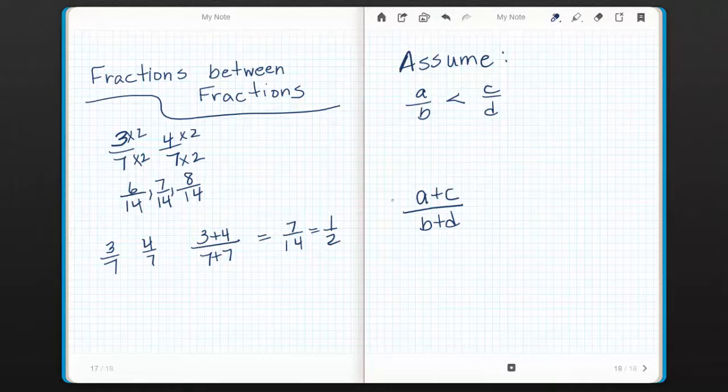The way we say between in algebra is actually like this. A fraction is between two other numbers if A over B is less than A plus C over B plus D, which is less than C over D.